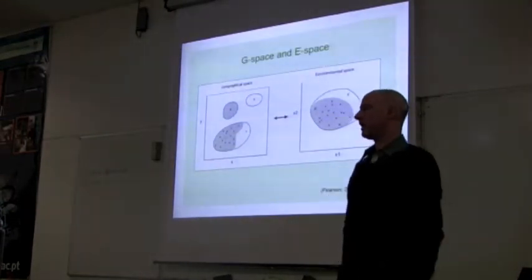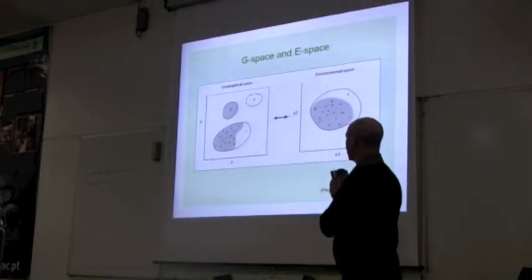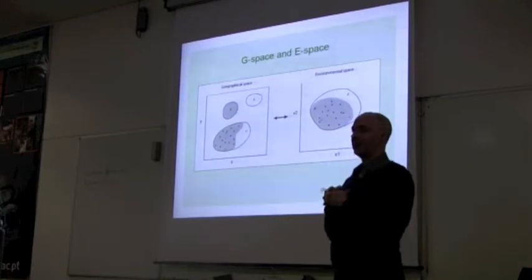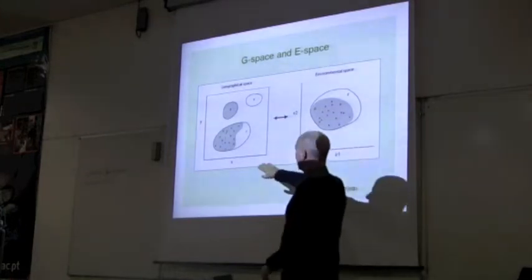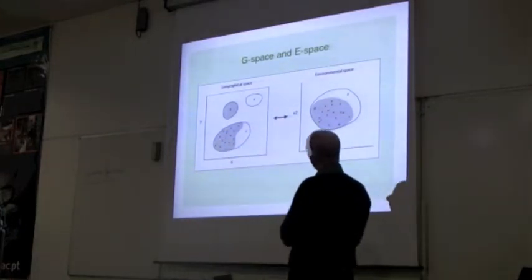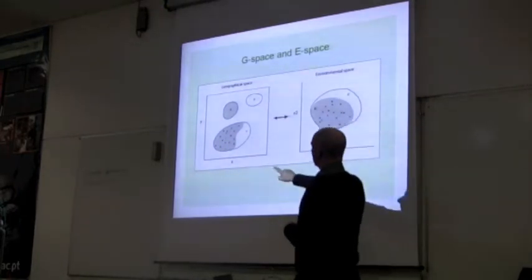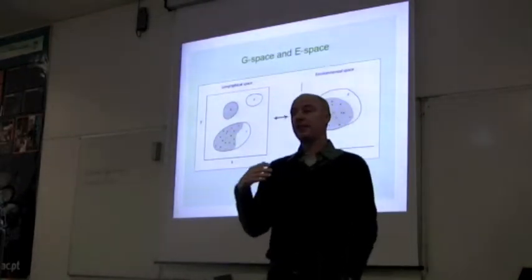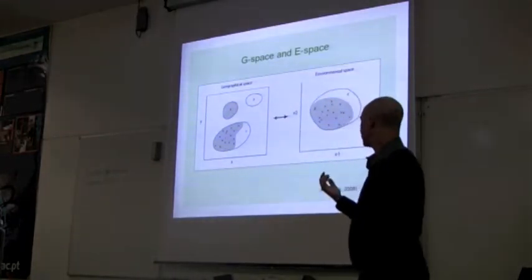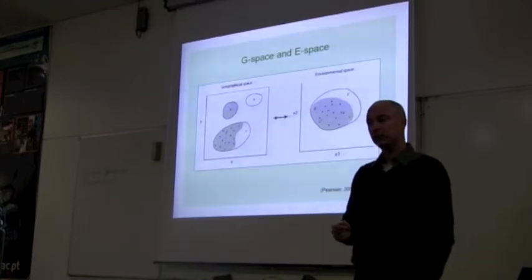Again about geographic space and environmental space, we know that species are not always found in all the places that are suitable for them. For example, this is geographic space, X and Y are latitude and longitude. All of the areas inside these three circles are areas that are suitable for the species. And the gray in this graph indicates the areas that the species actually occupies.